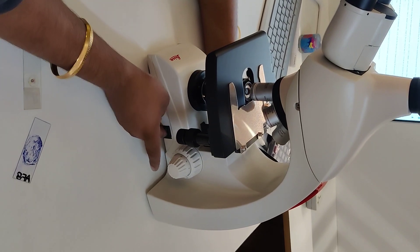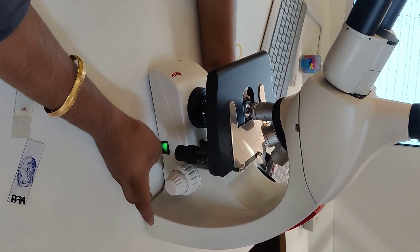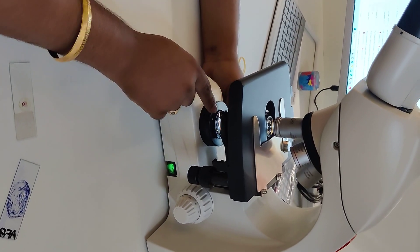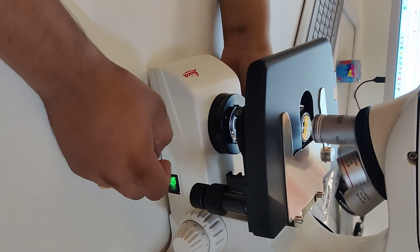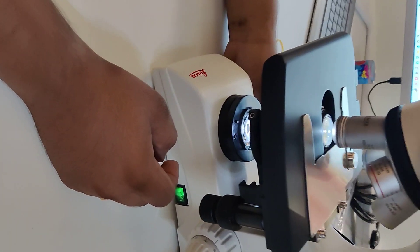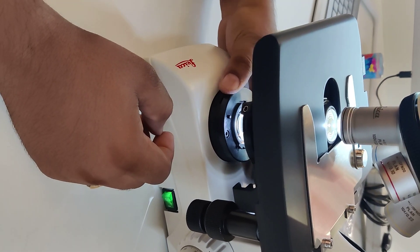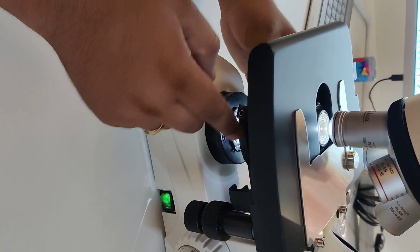Plug in the cable of the microscope and turn the switch on. Now slowly you will see the light intensity start. Here you can increase the light. This has got a cooler illumination in the bottom.